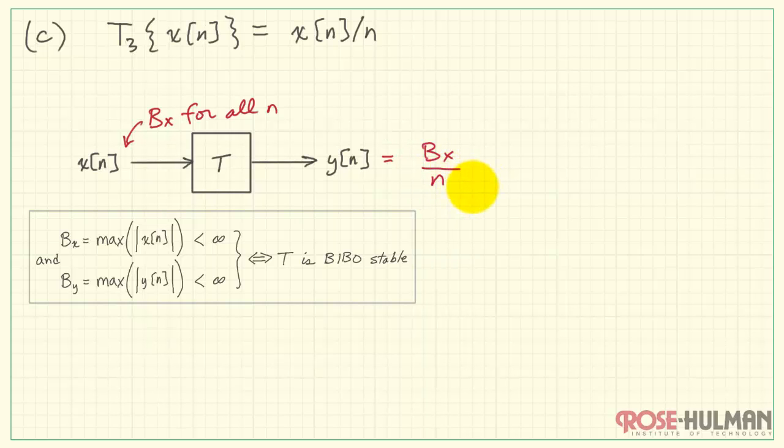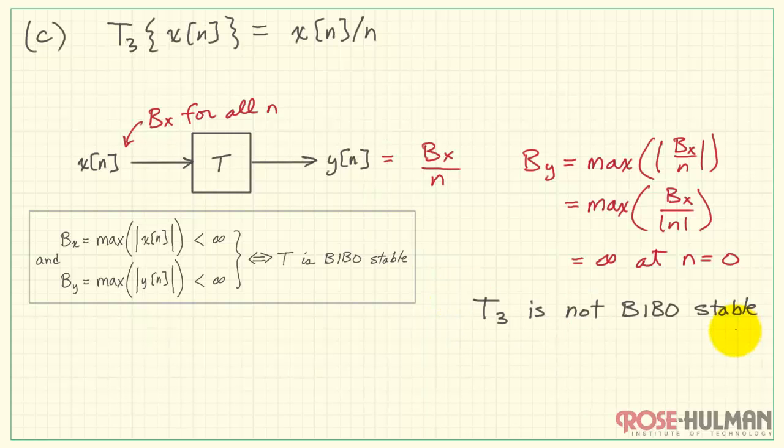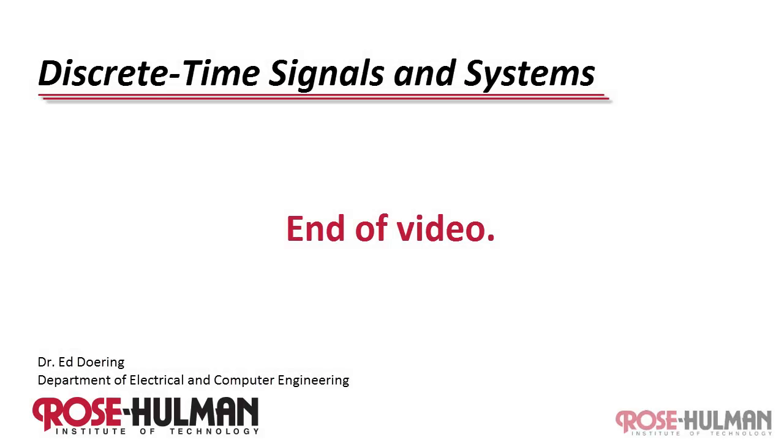At this point, let's return to the definition of our output bound BY. It's the maximum absolute value of the output sequence, Y of n. I can bring BX out separately. And we observe here that whenever n is equal to 0, we have a divide by 0 situation that gives us BY equals infinity. Therefore, we conclude that T3 is not BIBO stable.